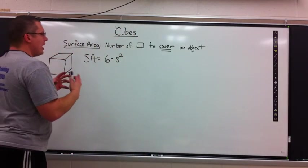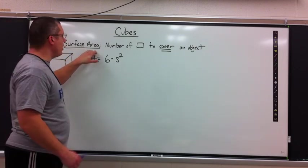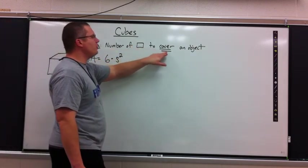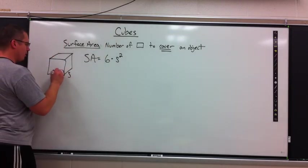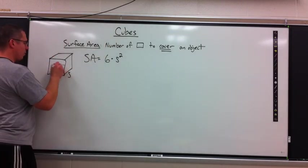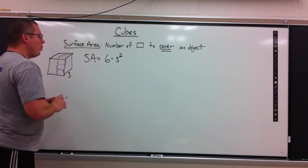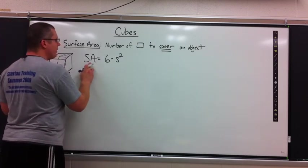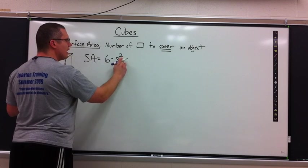What we're going to do is focus on the shape of a cube, but we're going to look at surface area first. As you remember, surface area is the number of squares it takes to cover an object. The formula is SA, surface area, equals 6 times S to the 2nd power.